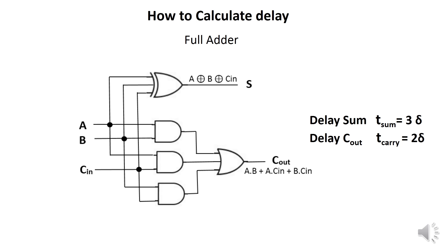Now let's see how to calculate the delay of a Full Adder. This is the logic circuit of the Full Adder. As we have seen, the delay of an Exclusive OR is 3δ. So the delay of the sum is 3δ, and the delay of the carry is 2δ, because the longest path is made with two single gates: one NAND and one OR.